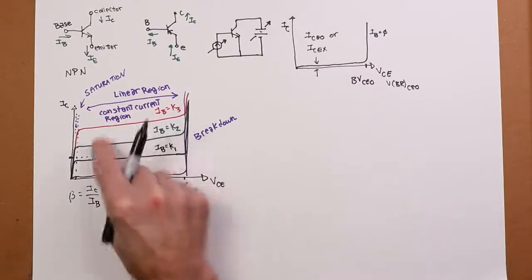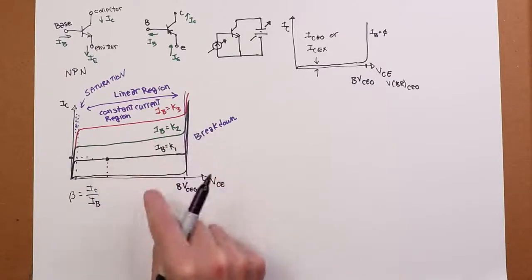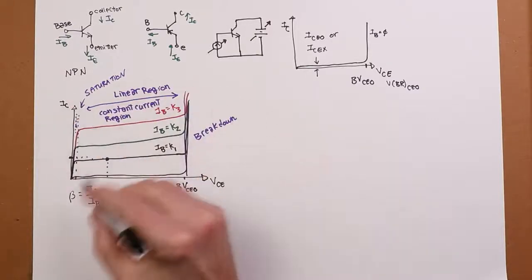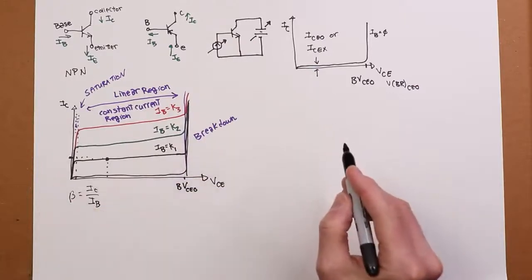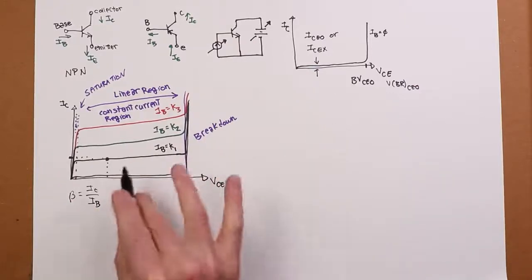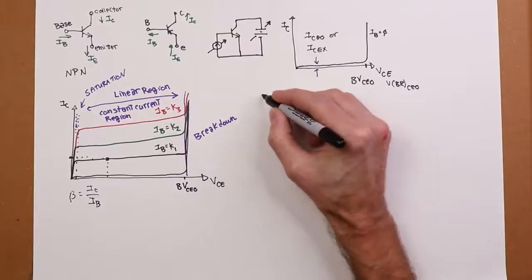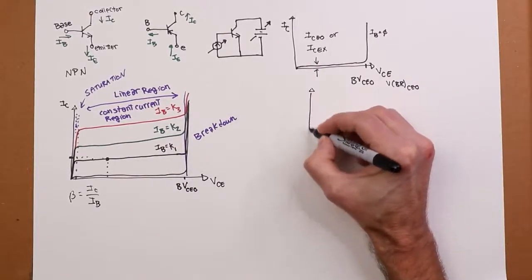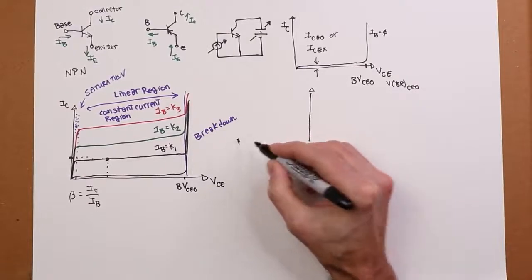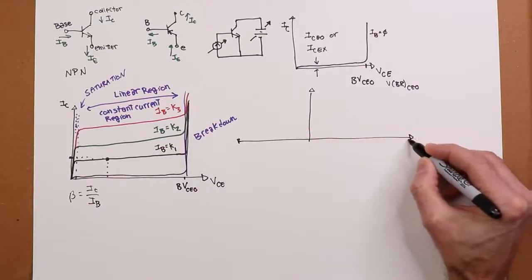Now, what you might have noticed on here is that I've drawn these curves. This is referred to as a family of collector curves. I've drawn these with a slight positive slope. That's real. That's not me just being a lousy artist over here.